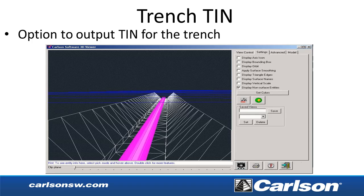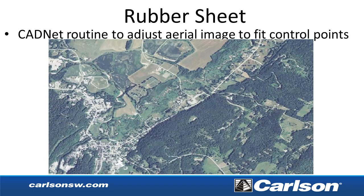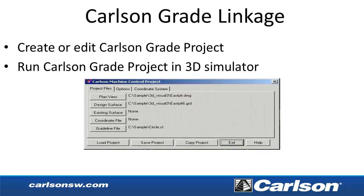In Carlson Takeoff and Trench, there's an option to output the TIN file for the trench. As part of the CADNET module, there's a new rubber sheet command to fit an aerial image onto multiple control points. For Carlson Grade, our machine control product, you can now create a Carlson Grade file with surfaces and other related files, and there's a new command to take a Carlson Grade project and run it in the simulator in the office.